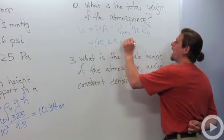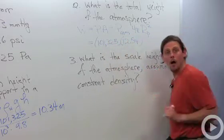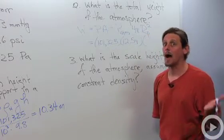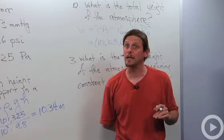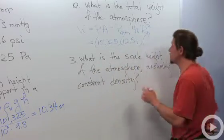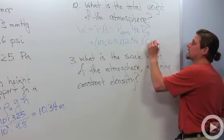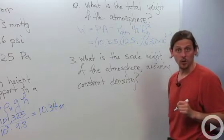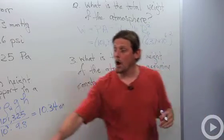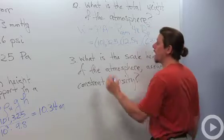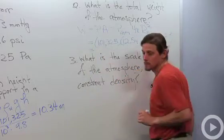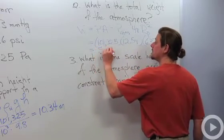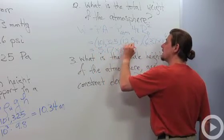So P atmosphere, 4 pi is 12.54. All right, and then we've got the radius of the planet. Oh, it's got to be in SI units. I said 6,370 kilometers. I'm not allowed to use kilometers. I got to say 6.37 times 10 to the 6 meters, and I'll square that.